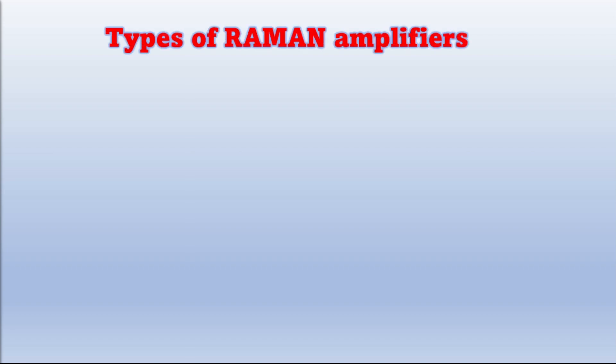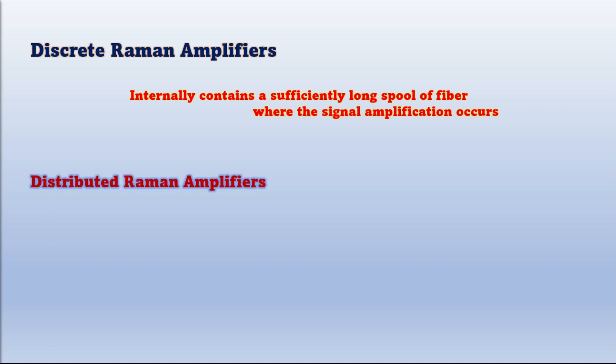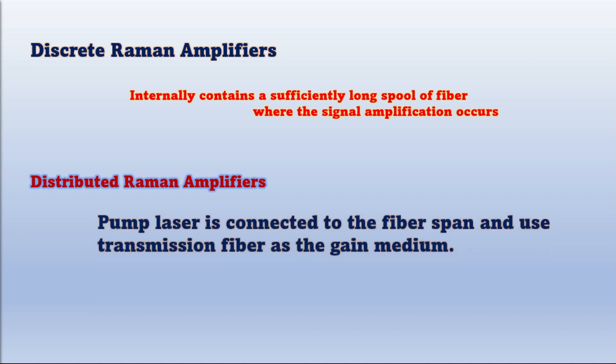Let's discuss types of Raman amplifiers. There are two types of Raman amplifiers: Discrete Raman amplifiers and distributed Raman amplifiers. Discrete Raman amplifier contains internally a sufficiently long spool of fiber where the signal amplification occurs. Distributed Raman amplifier has the pump laser connected to the fiber span and uses transmission fiber as the gain medium.